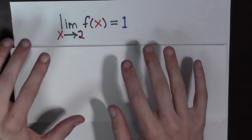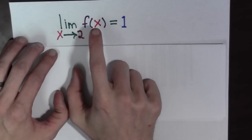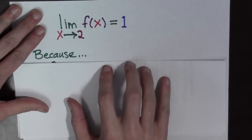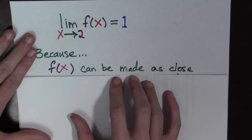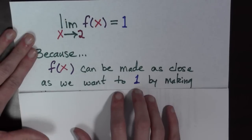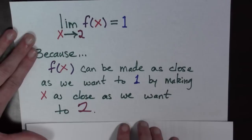So, in this case, we say that the limit as x goes to 2 of f of x equals 1. We say this because f of x can be made as close as we want to 1 by making x as close as we want to 2.